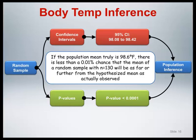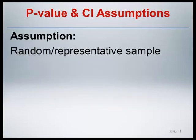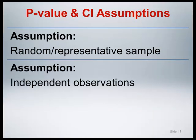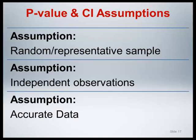As is always the case with statistics, there are assumptions to consider. We have already discussed the assumptions underlying the confidence interval for a population mean. As it turns out, the assumptions for p-values are the same as those for confidence intervals. The sample must be random or at least representative of the population under study. Subjects must be selected from the same population and independently from one another. The sample data being analyzed must be accurate.